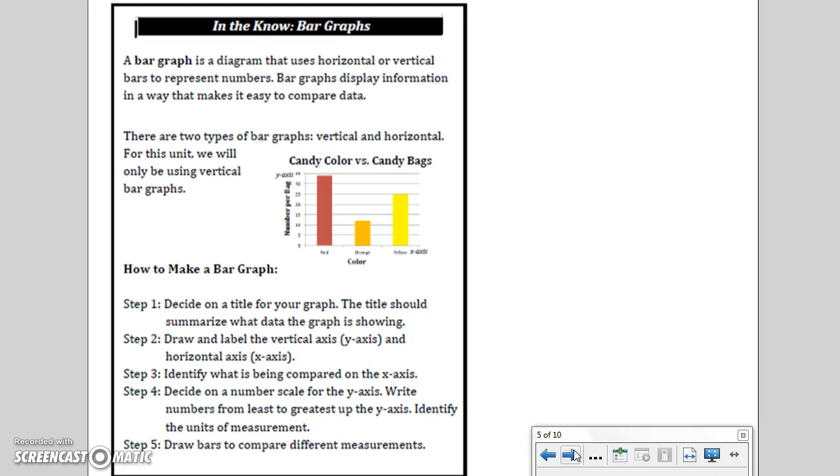How to make a bar graph. Step 1: Decide on a title for your graph. The title should summarize what data the graph is showing. Step 2: Draw and label the vertical axis, the y-axis, and the horizontal axis, the x-axis. Step 3: Identify what is being compared on the x-axis. Step 4: Decide on a number scale for the y-axis. Write numbers from least to greatest up the y-axis. Identify the units of measurement. Step 5: Draw bars to compare different measurements.